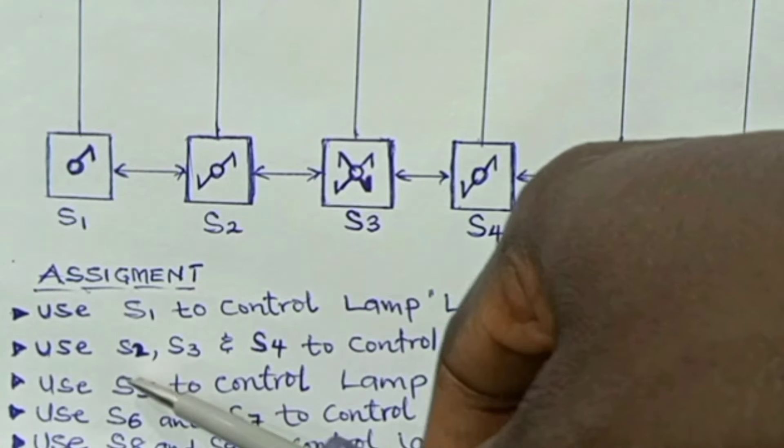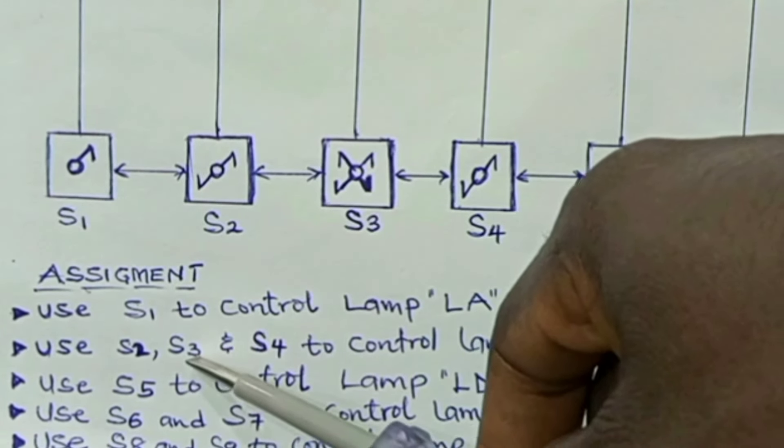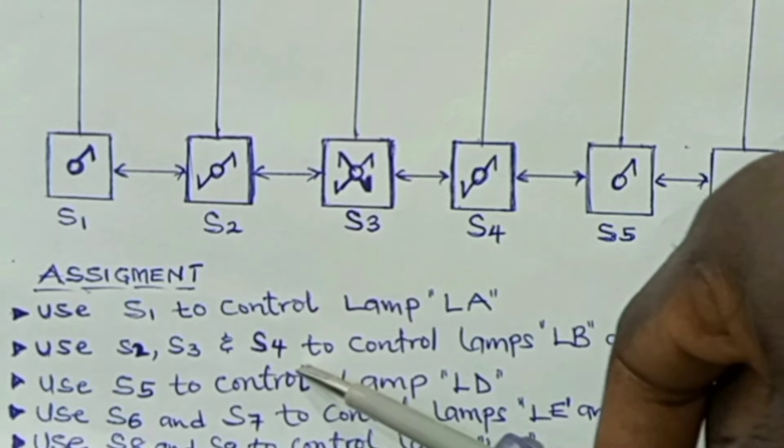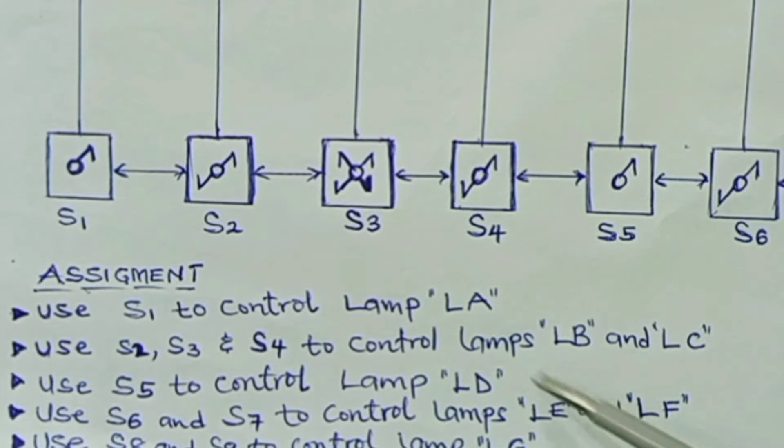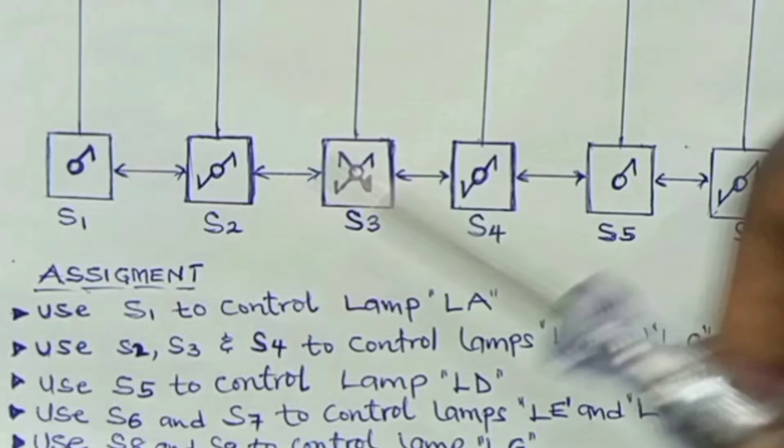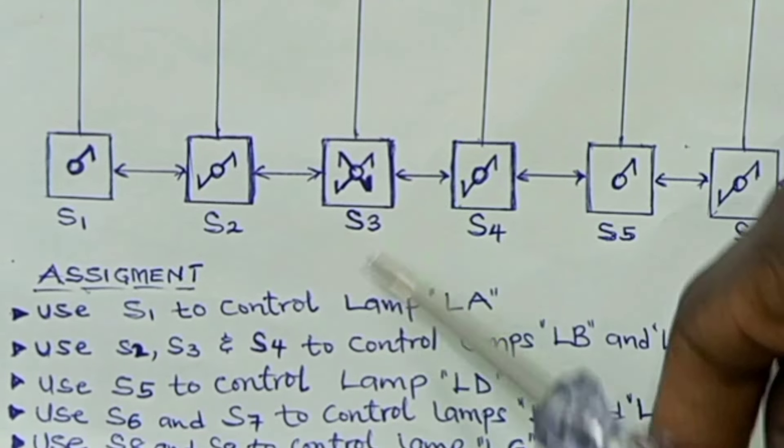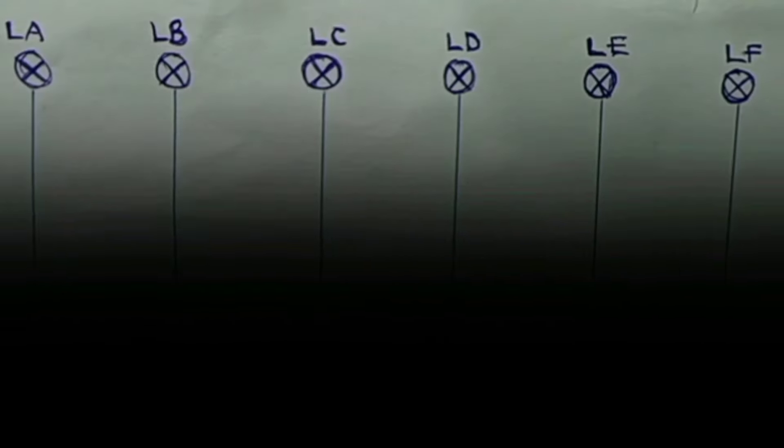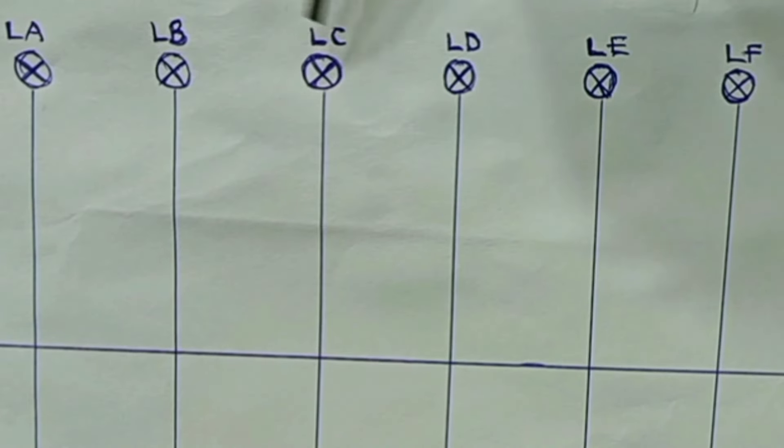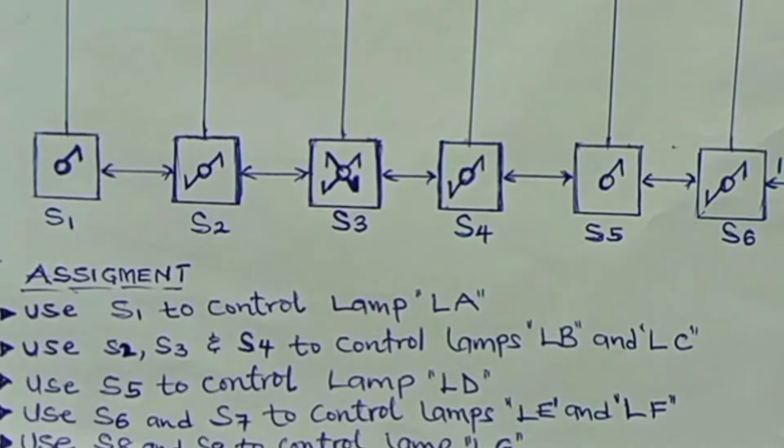Then, you are to use switch 2, switch 3, and then switch 4 to control the lamps marked LB and LC. So you are using switch 2, switch 3, and then switch 4 to control LB and then LC.